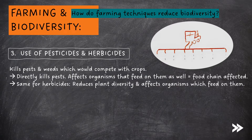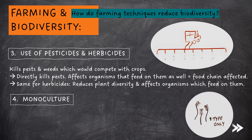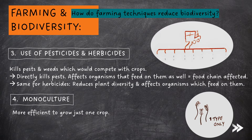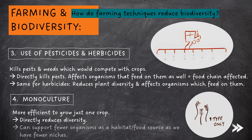Finally, monocultures also reduce biodiversity. A monoculture is when only one crop is grown to make farming more efficient. However, this directly reduces diversity, as the monoculture can support fewer organisms as a habitat or food source, as we have fewer niches.